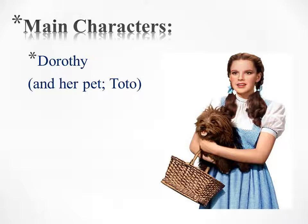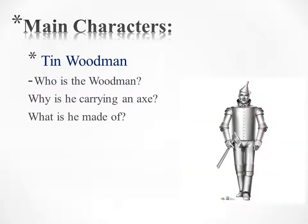The main characters of the story include Dorothy. Dorothy lived with her uncle Henry and Aunt Em on a small farm in Kansas. She had a pet dog called Toto. We also have the Tin Woodman as one of the main characters. He is one of the characters Dorothy is going to meet on her journey to the city of Emeralds. Why is he carrying an axe? Maybe to chop trees. What is he made of? He is made of metal.